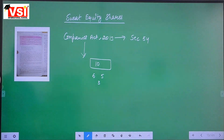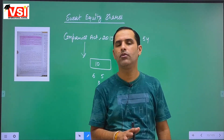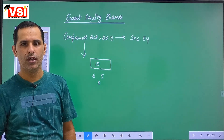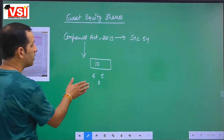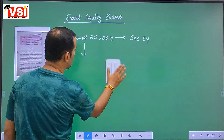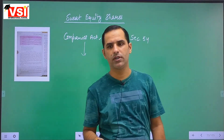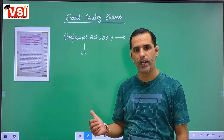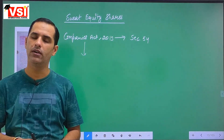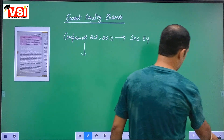The journal entries for issuing sweat equity shares will be identical to the journal entries for issue of other equity shares — whether issued to the general public, in private placement to promoters or their relatives, or as sweat equity shares. The journal entries relating to issue of shares will remain the same.